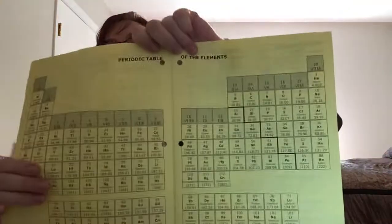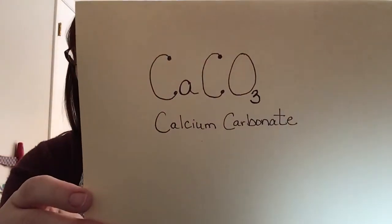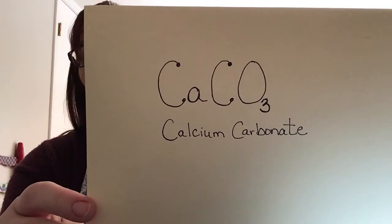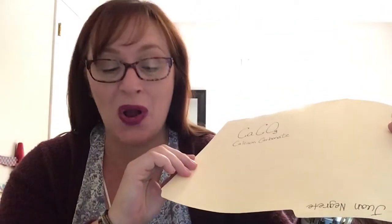Hi chemistry kids, Ms. Venable here bringing you a video lesson today and we're going to do a little lab experiment. You will need a piece of chalk, an electronic balance, your periodic table, and the chemical formula for chalk which is CaCO₃. The chemical name of that chalk is calcium carbonate.